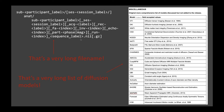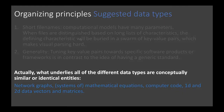Another principle is generality — if we tune key-value pairs towards a specific software product or framework, this defeats the idea of a generic standard. This is a very long file name shown here, and this is not even the actual file name — it is the regular expression to build it; the actual labels are likely to be much longer. Here also is a very long list of diffusion models from an extension proposal. Basically every paper in recent years introduces its own diffusion model. How do we decide which of these thousands of diffusion models to include in our standard?